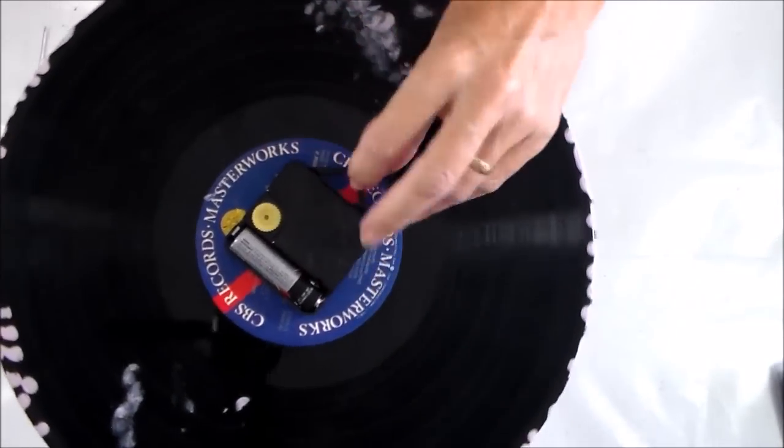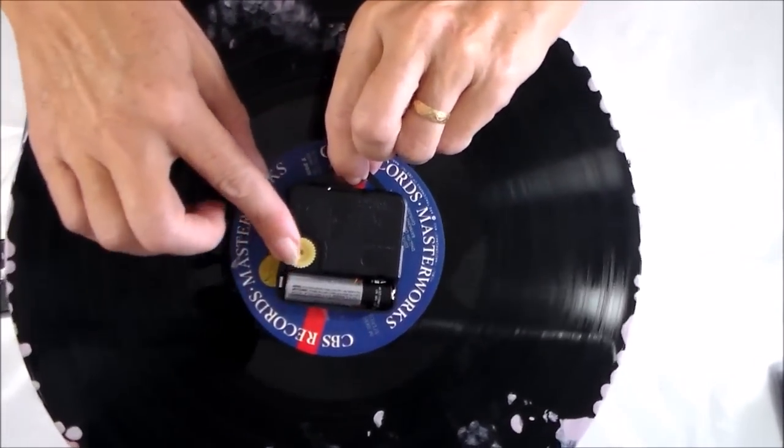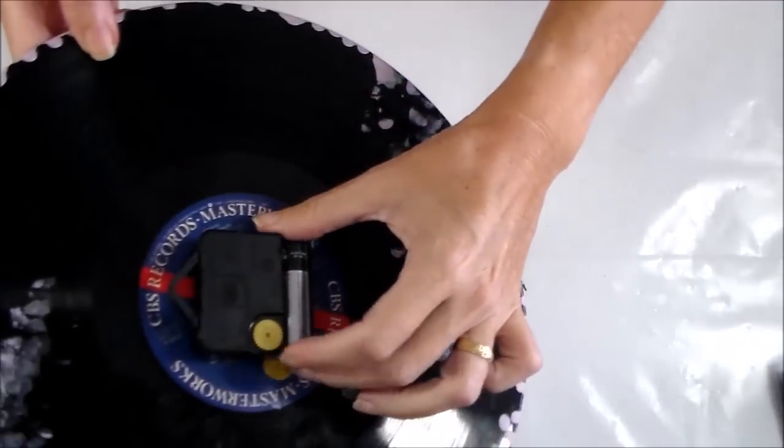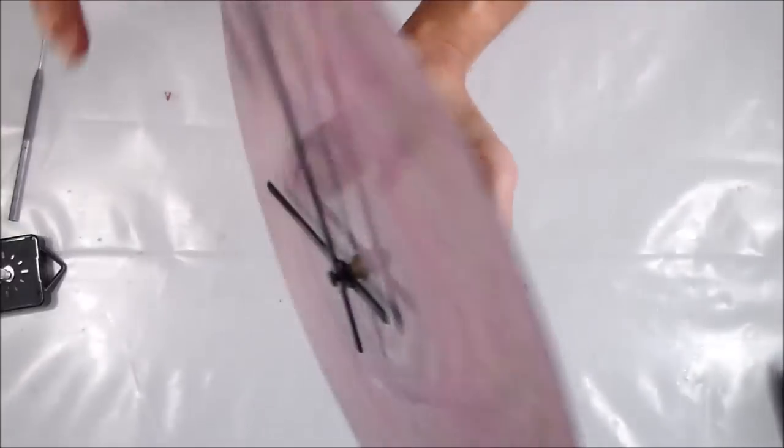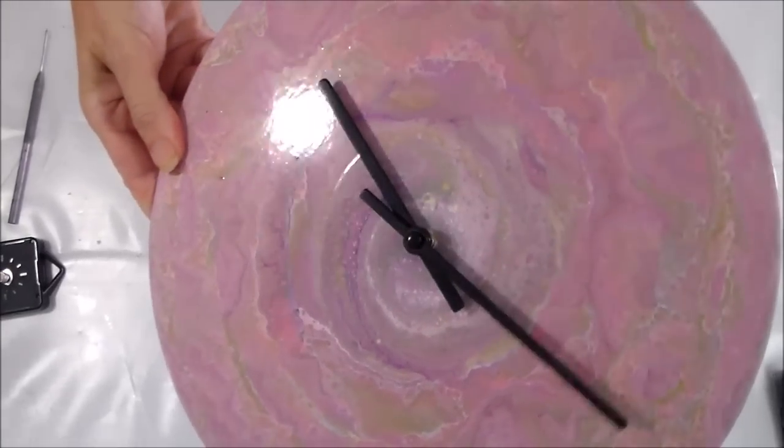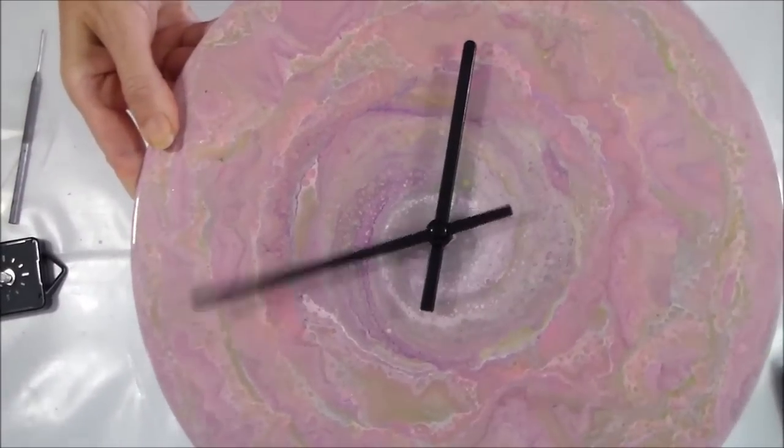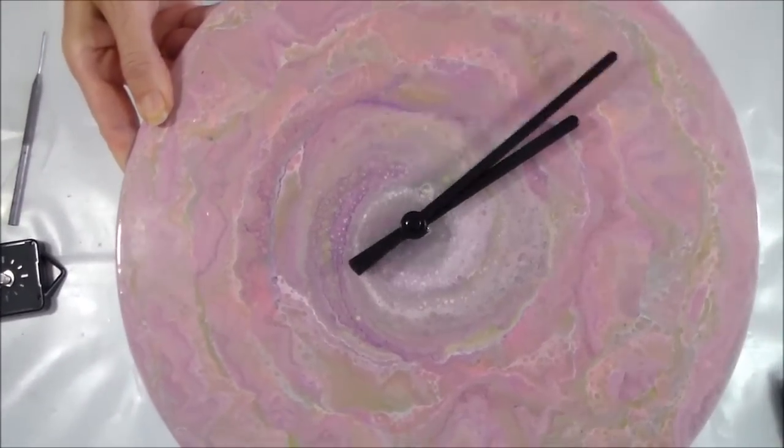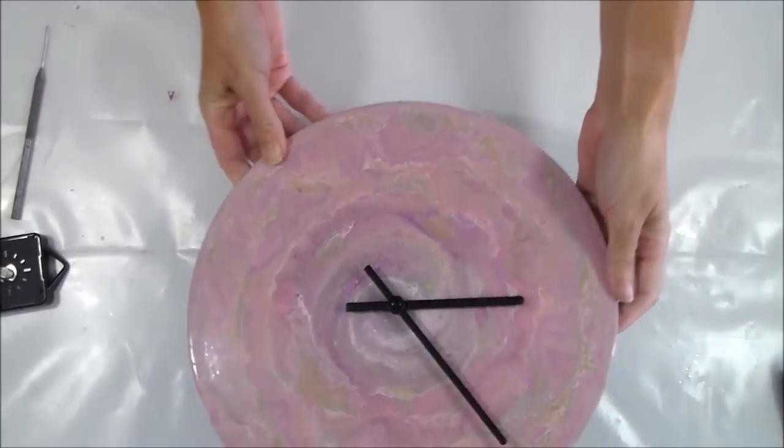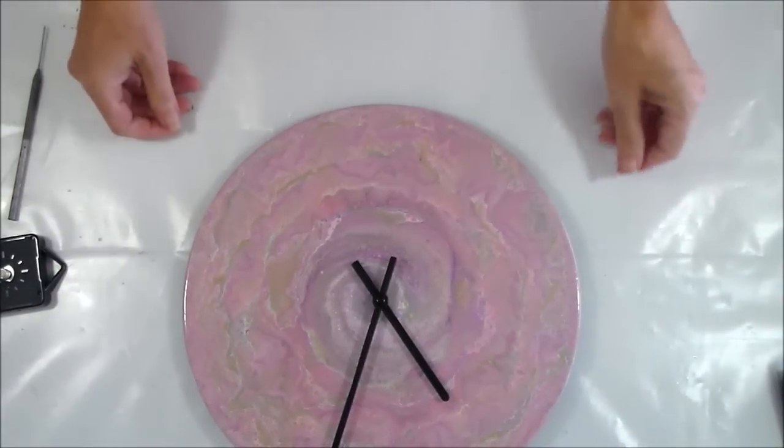And now when you go over to the back, you have this little turning mechanism. And as you turn it, it gives you a direction to turn it, which is either way. And as you turn it, you can watch the hands go round. And you just make sure that you've got them on without bending them and they aren't knocking into each other. And then that's it. Your clock is all ready to go.